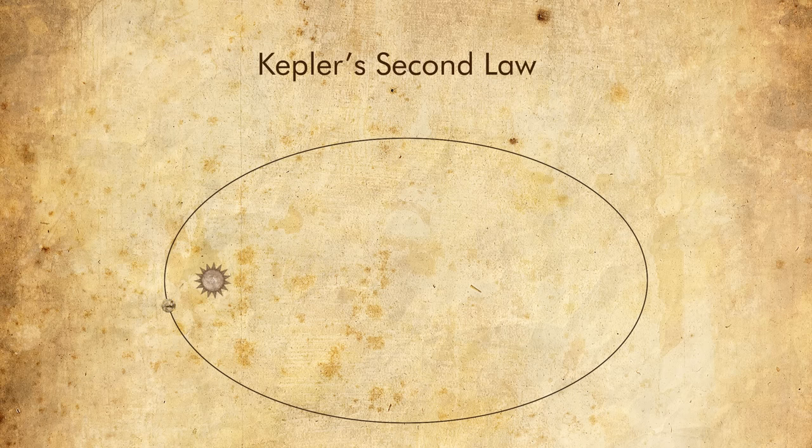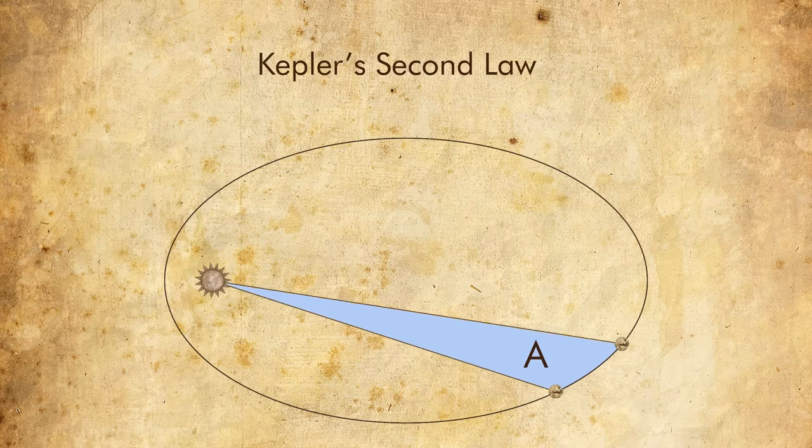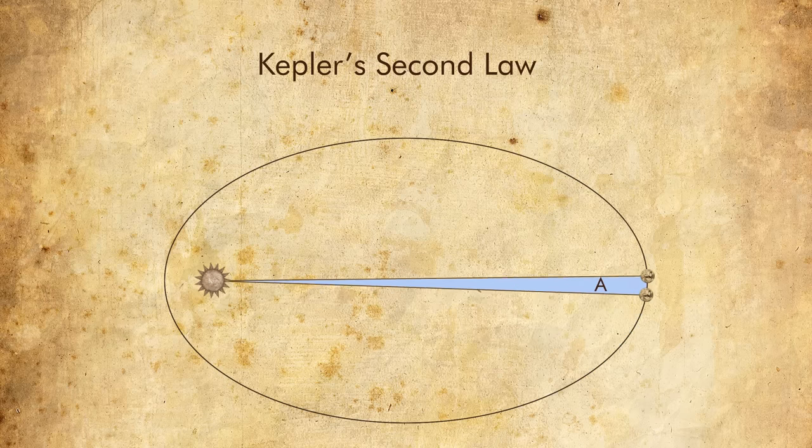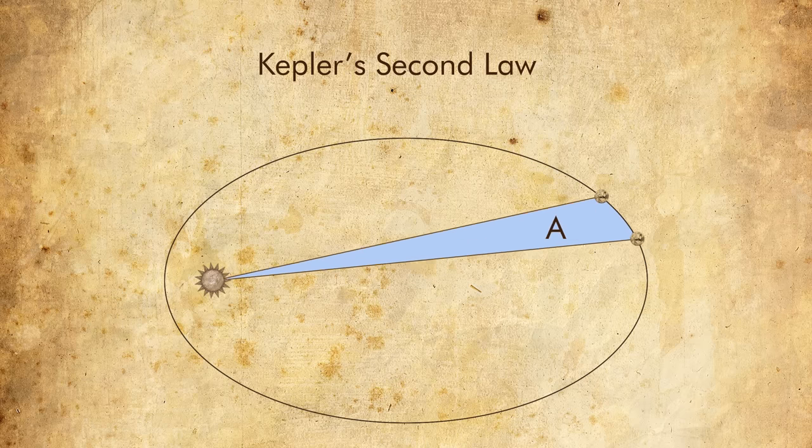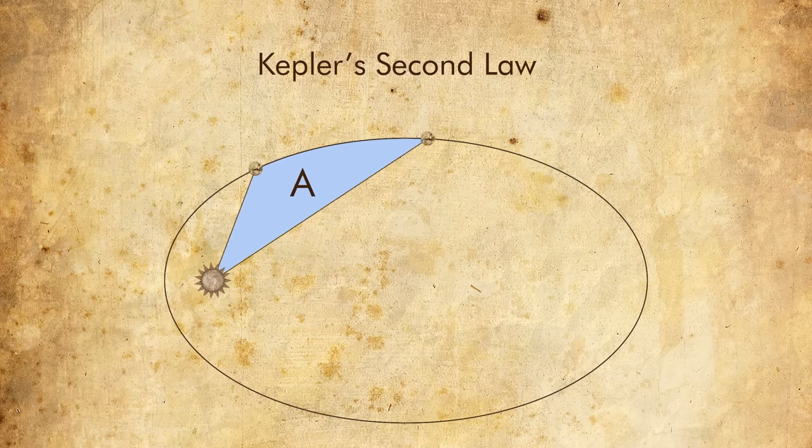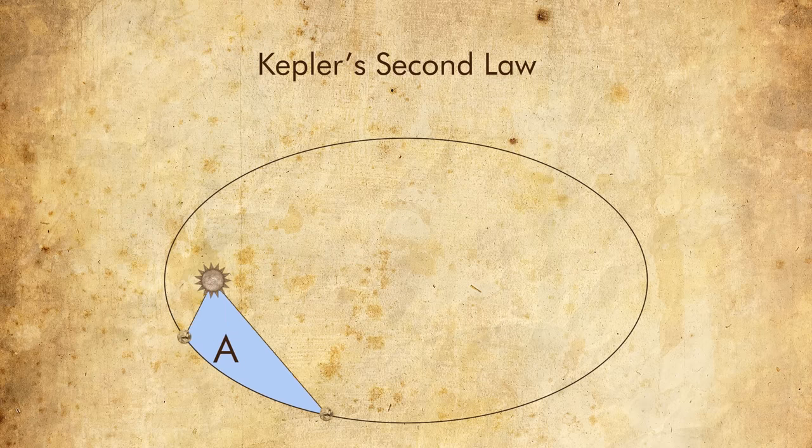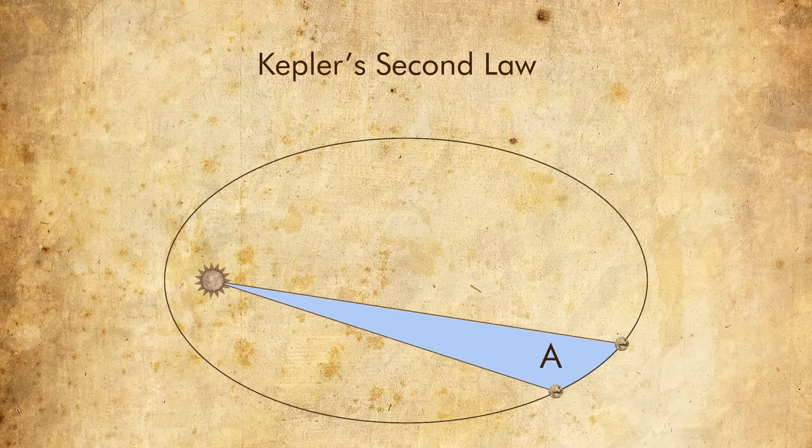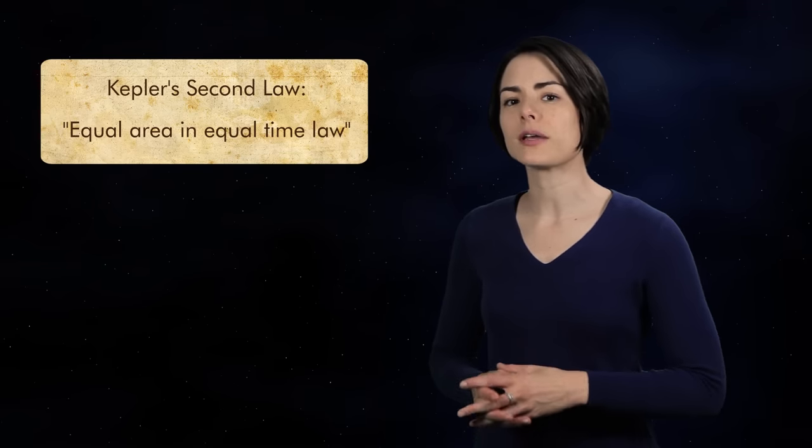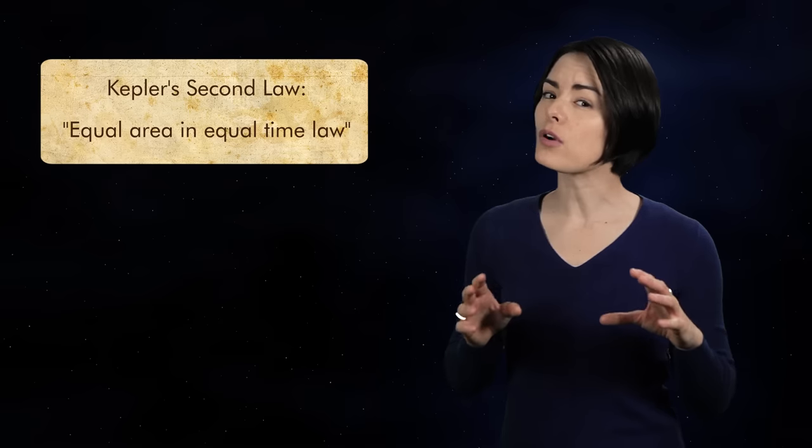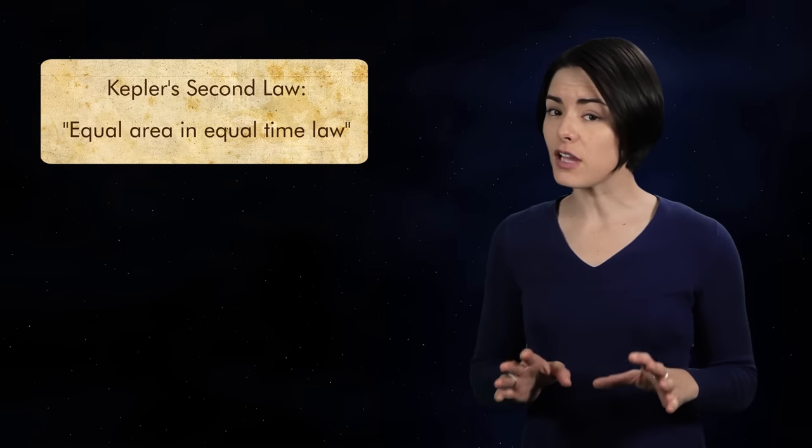The second law says that if you draw a line from the Sun to Mars and wait a fixed amount of time, that line will sweep out a certain area as Mars moves along its orbit. What Kepler noticed was that this area is exactly the same no matter where in the orbit you are. This is often phrased as Kepler's equal area and equal time law, and this law works because Mars doesn't move at a constant velocity. It speeds up the closer it gets to the Sun.